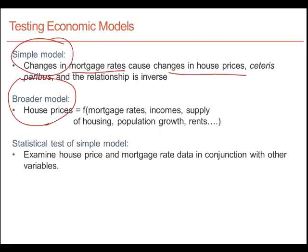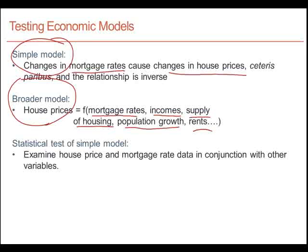When we investigate this relationship, we're not saying that mortgage rates are the only things that influence house prices. In a broader perspective, we would recognize that house prices are a function not only of mortgage rates, but also the incomes of people buying those houses, supply conditions in the economy, population growth, whether rents are high or low, and perhaps several other factors as well. So here we have a general statement of a broader model relating house prices to a whole variety of influences.